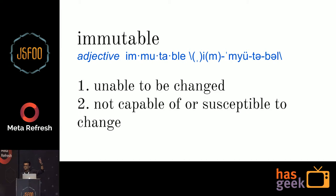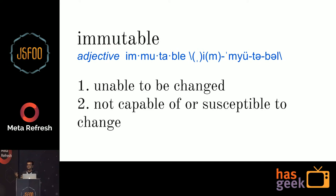Just to set the context, here is the dictionary definition of immutable. Immutable simply means unable to be changed — something that cannot be changed once you create it. In terms of a JavaScript application, for example, you create a variable and you're not able to change it; it will just stay there wherever you try to access it from.